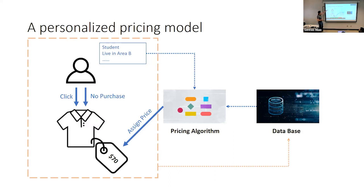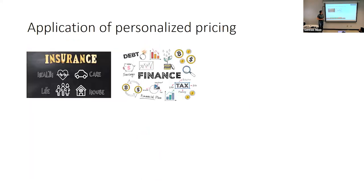Once everything is done, your whole shopping process is recorded in the historical database, which is used to update the pricing decision for next time. This is not uncommon — it could be applied to a group of customers based on geographical location. Personalized pricing has many applications in traditional industries such as insurance and finance, where it is pretty common for everyone to get a different price.